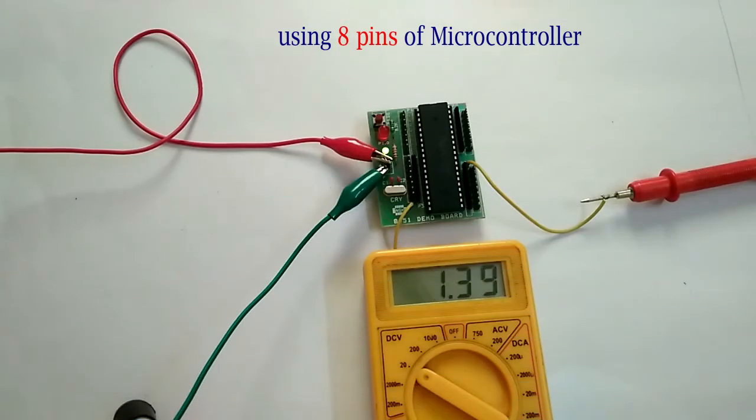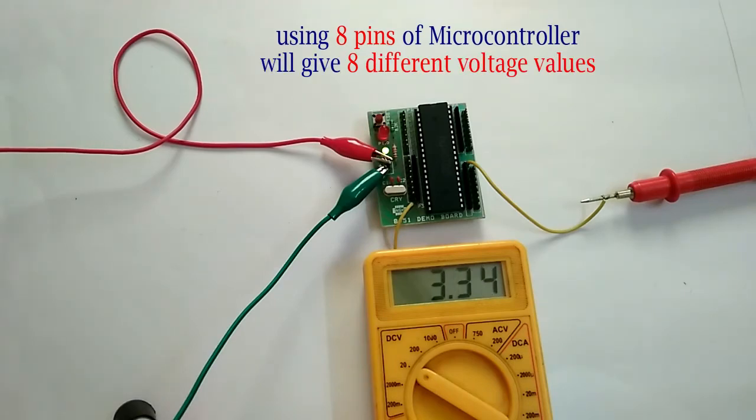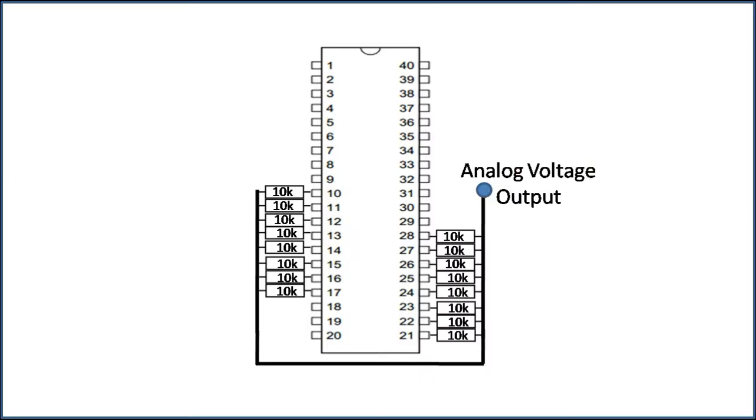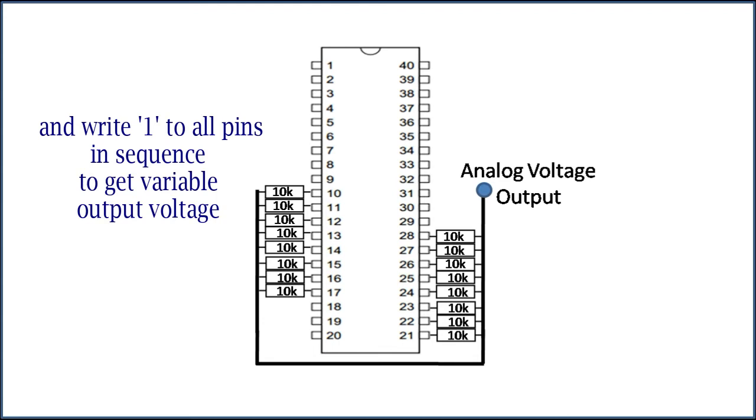Using 8 pins of the microcontroller will give 8 different voltage values. To have more resolution, you can connect more 10k resistors to other pins of the microcontroller and connect the other ends of the resistors to a common point. Start by writing 0s to all the pins and start writing 1s in sequence to get a variable output voltage.